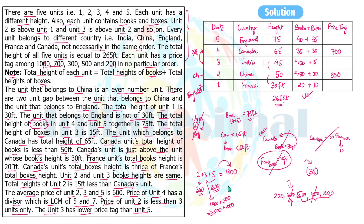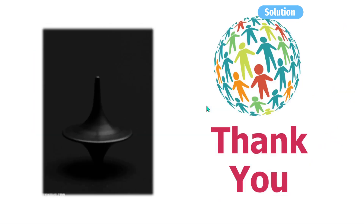Unit three has a lower price than unit five, so unit three's price is 500 and unit five's price is 1000. That leaves unit one's price as 200. This is the final answer. I think everyone would have gotten this answer. The mains exam version had fewer variables — I just added extra variables to make it more challenging, so don't be scared. Attempt such puzzles confidently and score well. Thank you and all the best!